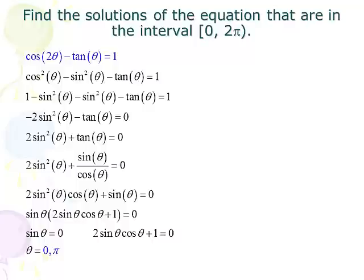And when I do that, I end up with 2sin²θ cos θ + sin θ = 0. So I multiply all three terms, the 2sin²θ, the sin θ / cos θ, and the zero by cos θ. Now, they both have a sine in common. So I factor out a sine. And I have sin θ times the quantity (2sin θ cos θ + 1) = 0.